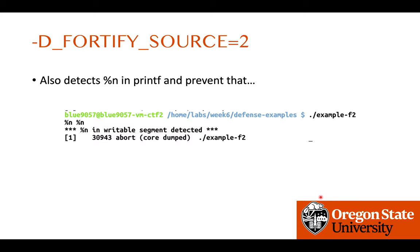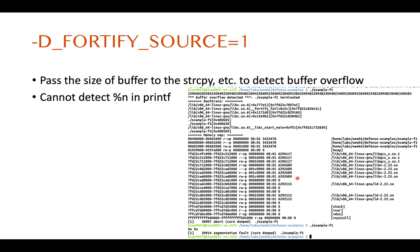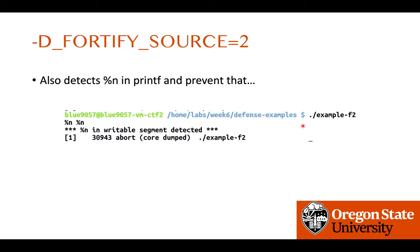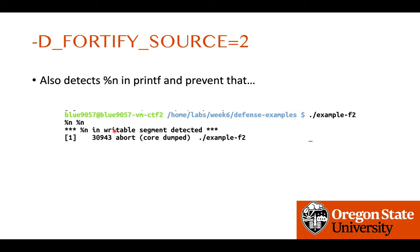After applying `-D_FORTIFY_SOURCE=2`, both `__strcpy_chk` and `__printf_chk` are applied. The buffer overflow vulnerability is detected similarly to the `_FORTIFY_SOURCE=1` case, and the printf misuse is also detected — it checks the number of percent directives. If you use `%n`, it automatically blocks that because it treats `%n` as malicious use of printf.